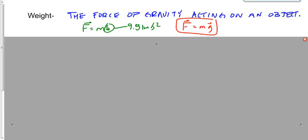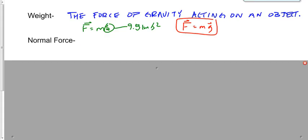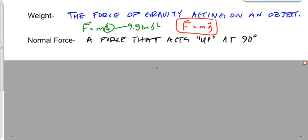The next force is the normal force. Normal in physics means 90 degrees, so we're talking about a force that acts at 90 degrees. It acts up at 90 degrees to the ground — I put 'up' in quotation marks because it's not necessarily up, and 'ground' in quotation marks because it's not necessarily the ground. In a roller coaster, the normal force is provided by the track. Standing on the ground, it's provided by the ground. Sitting in your seat, it's provided by your seat.